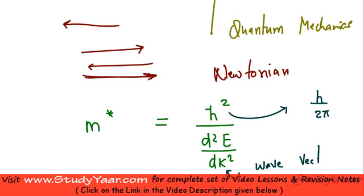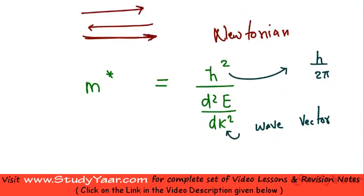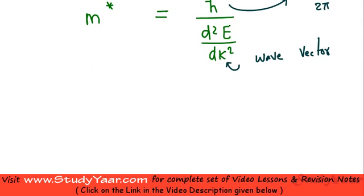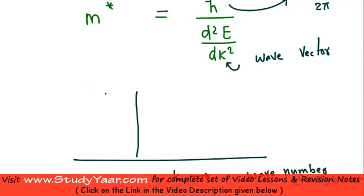So if you were to draw a plot between your wave vector modulus and your energy, it's going to be something like this. Let's just say over here I have my k, which is the modulus of wave vector, which is the wave number. And over here I have my energy. So your plot basically looks something like this.